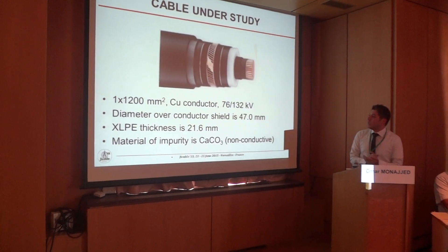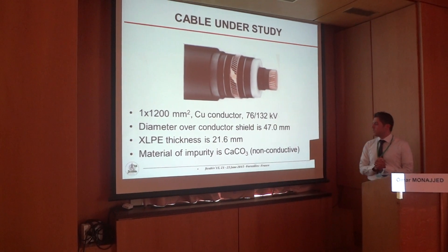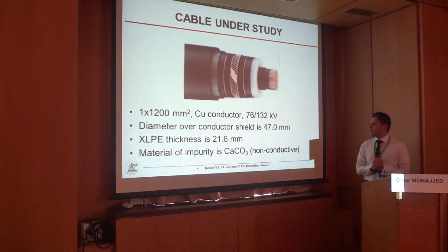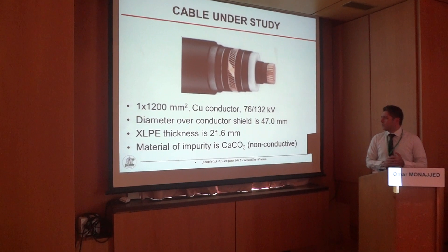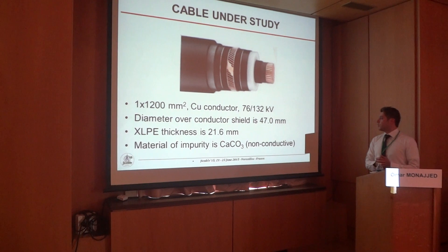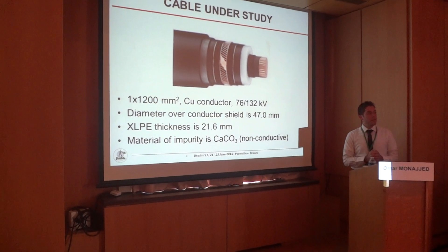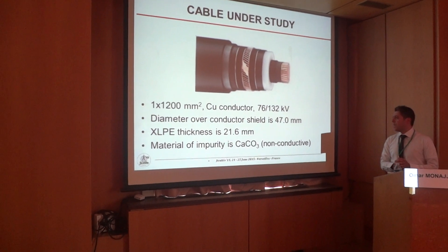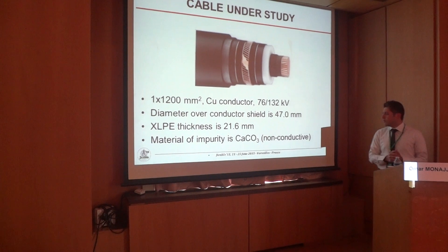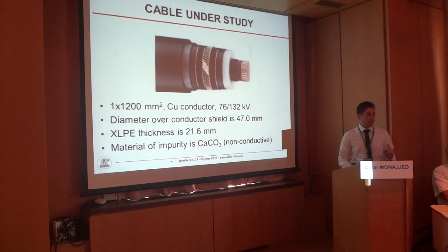Cable under study: our cable is 1×1200 mm² copper conductor, 132 kV. The diameter of the conductor shield is 47 mm. XLPE thickness is 21.6 mm. And the material of impurity is calcium carbonate, which is non-conductive.